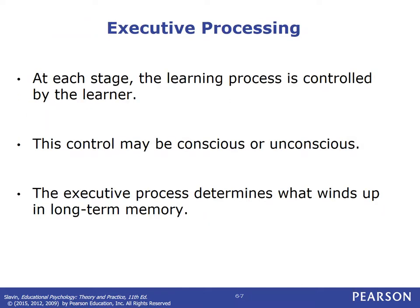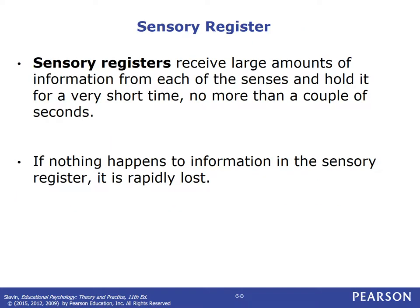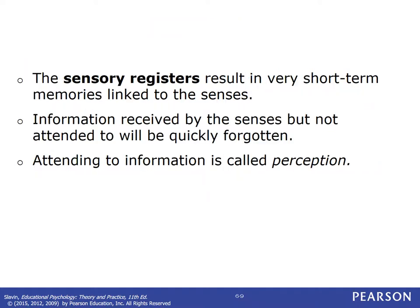At each stage, the learning process is controlled by the learner — this control may be conscious or unconscious — and the executive process determines what winds up in long-term memory. We really have to focus on it to get something to wind up in long-term memory. The sensory register receives large amounts of information from each of the senses and holds it for no more than a couple of seconds. If we don't attend to it, it'll be quickly forgotten. Attending to information can also be called perception.